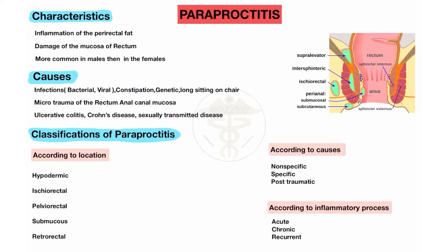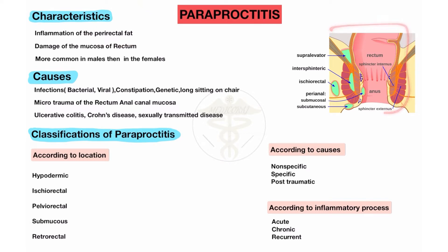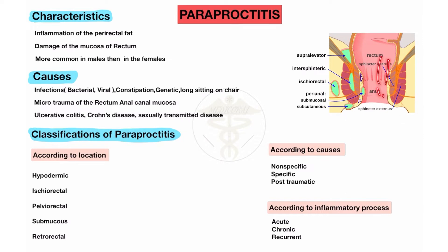Paraproctitis. I already discussed hemorrhoid or Piles disease. First, read the topic of hemorrhoid, then you will understand the difference between hemorrhoid/Piles and Paraproctitis. Today I will discuss Paraproctitis. The characteristic of Paraproctitis is that it is the inflammation of the perirectal fat — the inflammation occurs in the perirectal fat, not mostly inside the rectum.